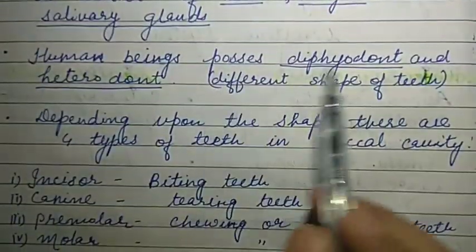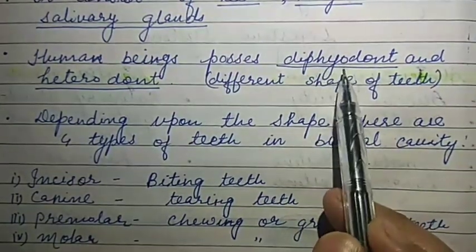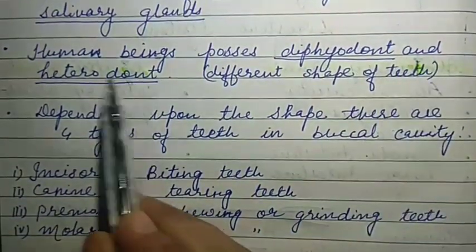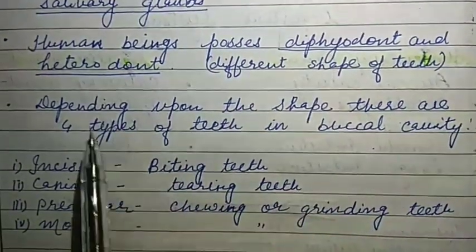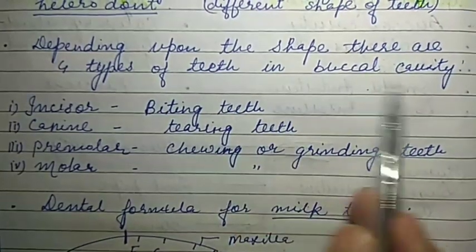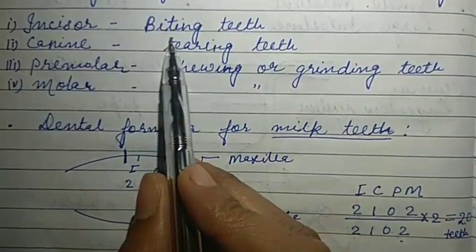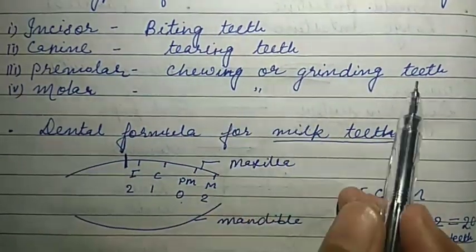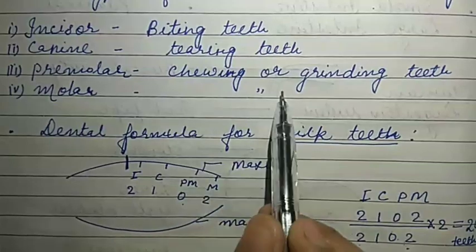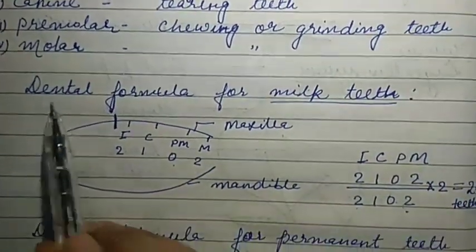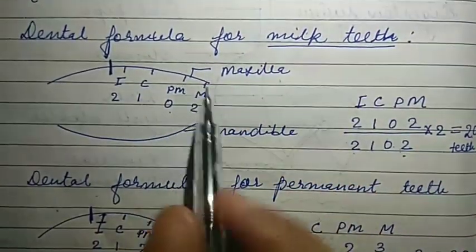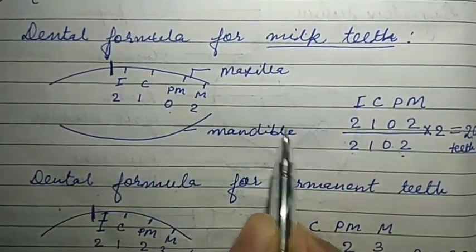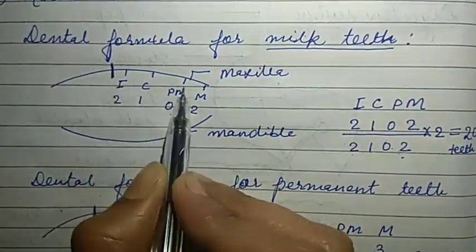Human beings are diphyodont, meaning we have two sets of teeth in our lifetime: milk teeth and permanent teeth. We are also heterodont, meaning we have different shapes of teeth. Depending upon their shape, there are four types of teeth: incisors (biting teeth), canines (tearing teeth), premolars (chewing or grinding teeth), and molars (also chewing or grinding teeth). For the milk teeth dental formula, the jaw is divided into maxilla (upper jaw) and mandible (lower jaw), and further into left and right sides.